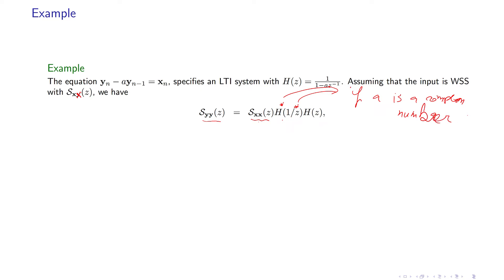Otherwise, you don't need to put these two conjugates. These two conjugates will cancel each other if a and z are real. So if you do that, if you put H of z, this part is H of z.